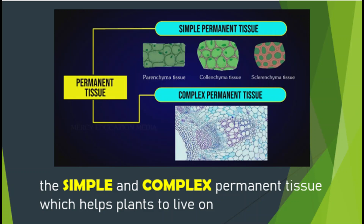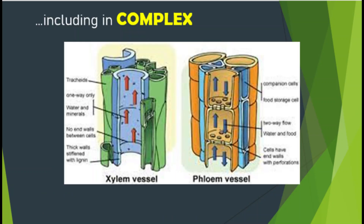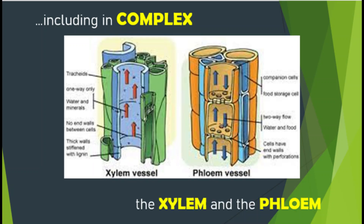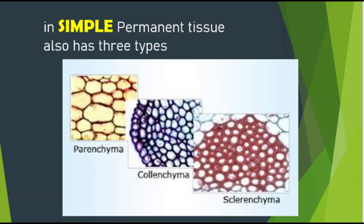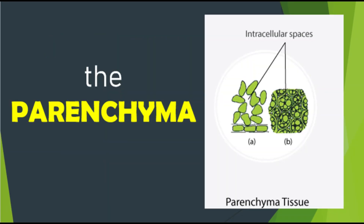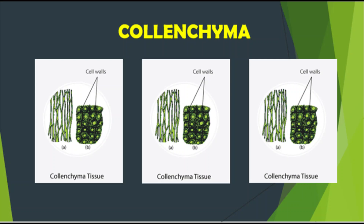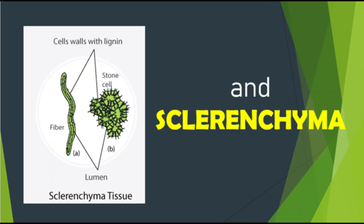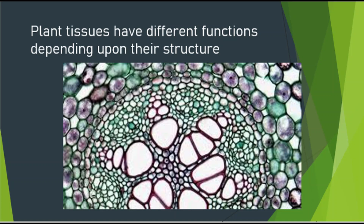Simple permanent tissue has three types: parenchyma, colenchyma, and sclerenchyma. Plant tissues have different functions depending upon their structure.